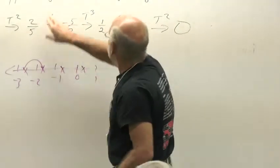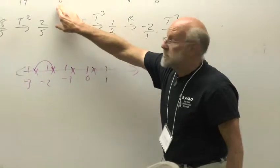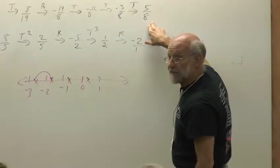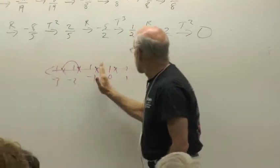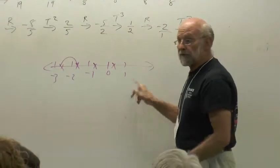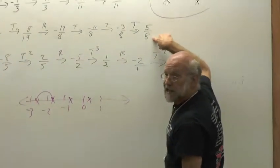So, what did we do? We started with, in this case, negative 19 eighths, and I took enough steps until finally we went positive. So, the 19 eighths was sitting here. Finally, we get here to a number that's between zero and one, meaning the numerator, five, is less than eight.